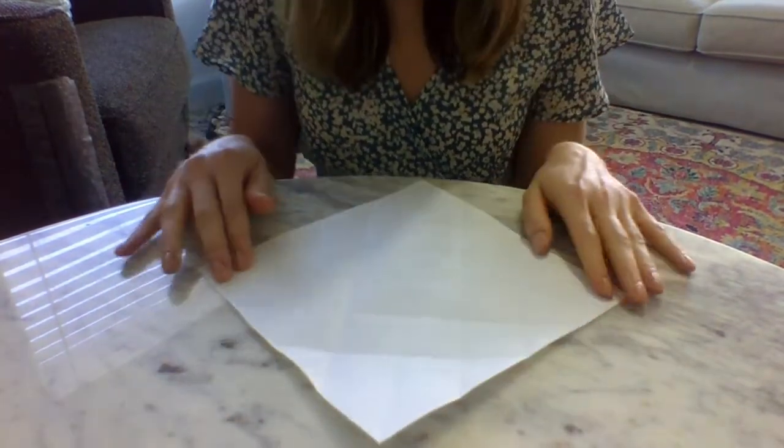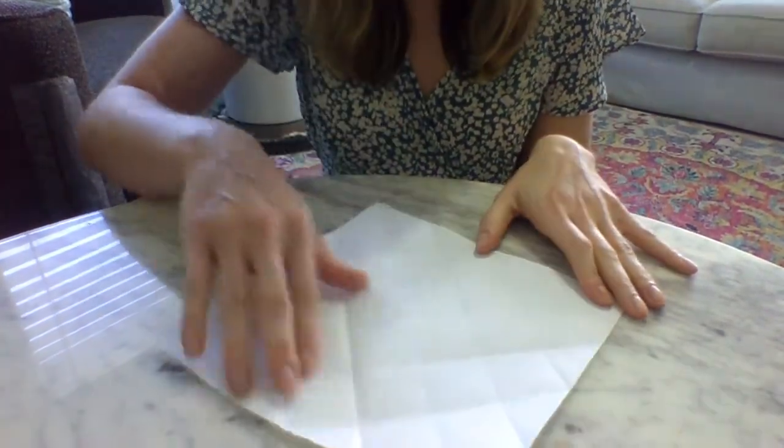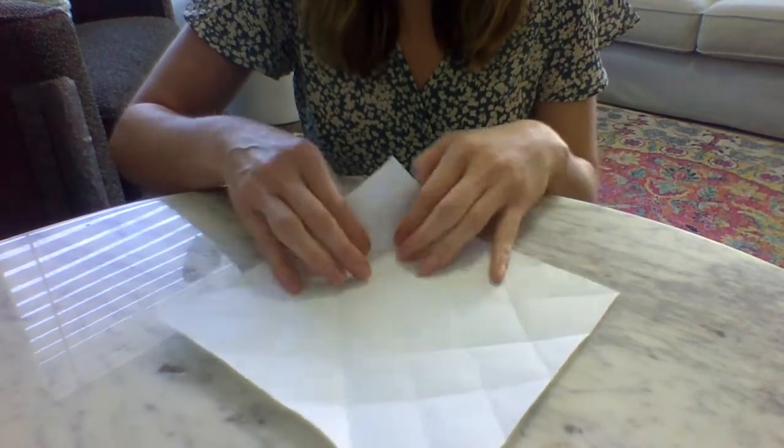So now when you open up your paper, you should see lots of little squares on the inside and then these triangle pieces.